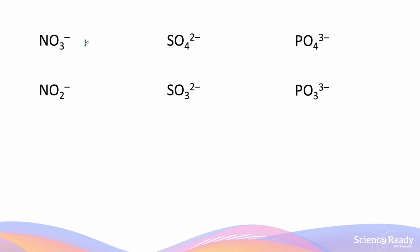NO3- is known as nitrate ion. It has one nitrogen atom, three oxygens, and an overall charge of negative one. NO2- is known as nitrite ion, with one nitrogen and two oxygens but the same overall charge as nitrate. SO4 2- is known as sulfate ion, with one sulfur and four oxygen atoms and an overall charge of two minus.